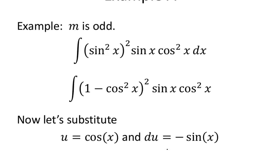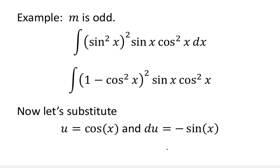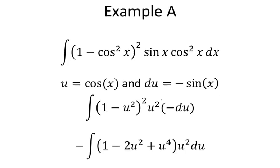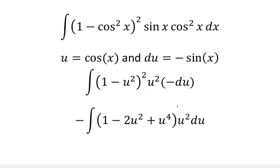The sine squared of x can be rewritten as 1 minus cosine squared of x. Now if we make the substitution of u equals cosine of x and du equals negative sine of x, we can rewrite this as 1 minus u squared, quantity squared. Then the sine of x becomes du — it's actually going to negate everything — and the cosine squared becomes u squared.